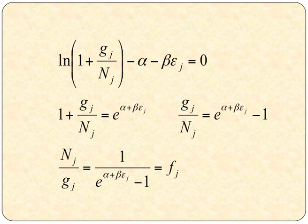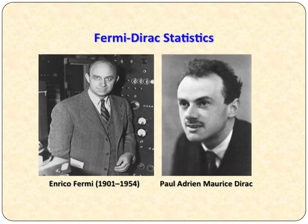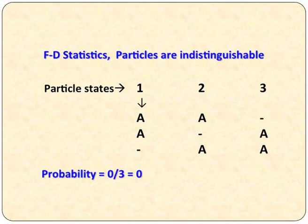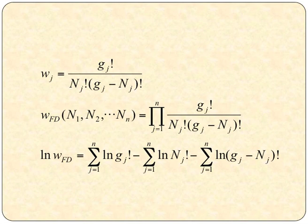The last statistics is Fermi-Dirac statistics. According to this, particles are also indistinguishable. With particle states 1, 2, 3, since particle a equals b, we write a only — there is no b particle. The probability shows that two particles occupying the same state is not allowed, so the probability equals 0. In Fermi-Dirac statistics, particles obey the Pauli exclusion principle, whereas in Bose-Einstein statistics particles do not obey Pauli's exclusion principle. The probability formula is W = g_j! / (n_j! times (g_j minus n_j)!), where g_j is always greater than n_j.